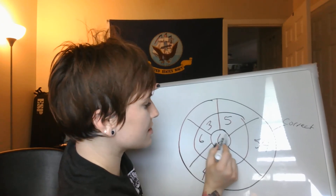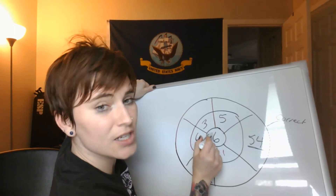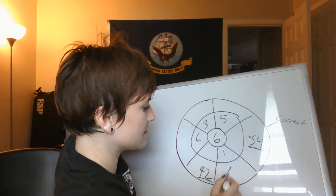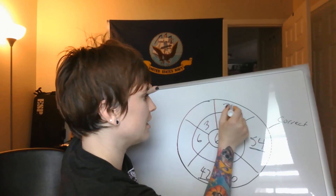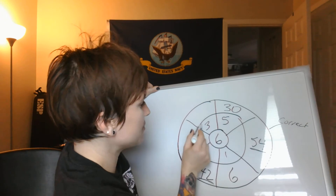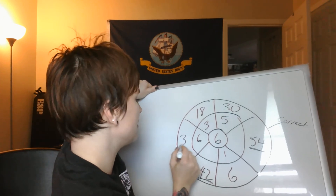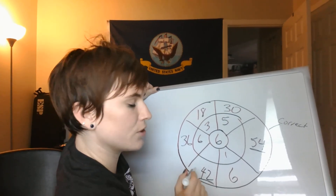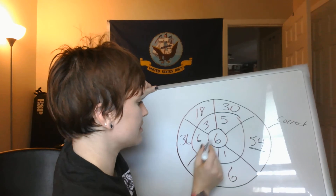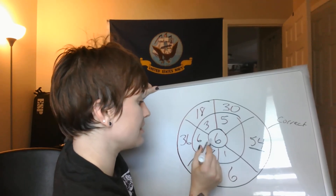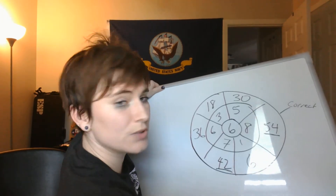We need to figure out: six times what is 54, six times what is 42. We'll do six times one together because we know that six times one is six. Six times five is 30. Six times three is 18. Six times six is 36. Six times seven is 42, and six times eight is 54. So that's all you're doing on this problem.